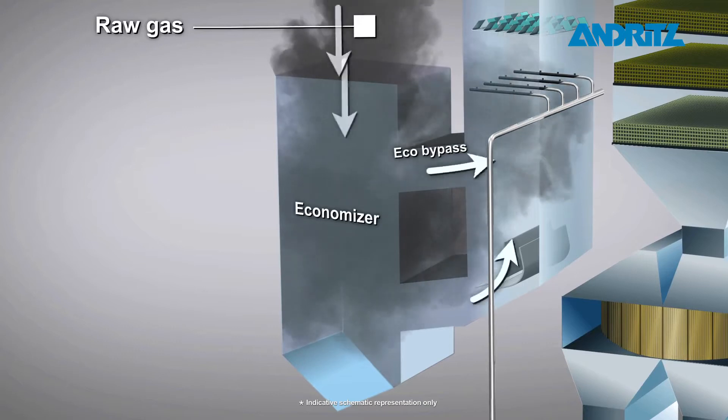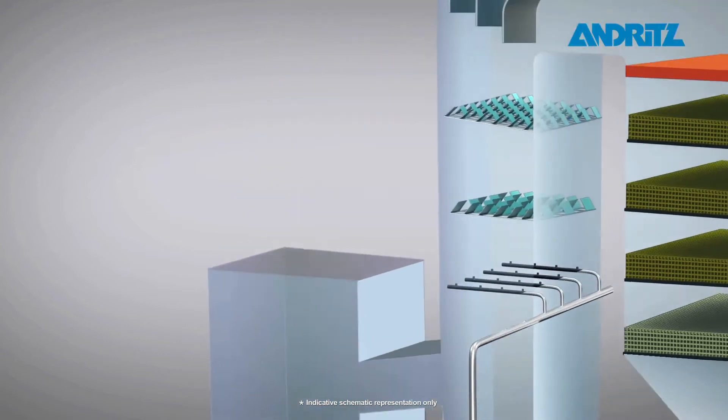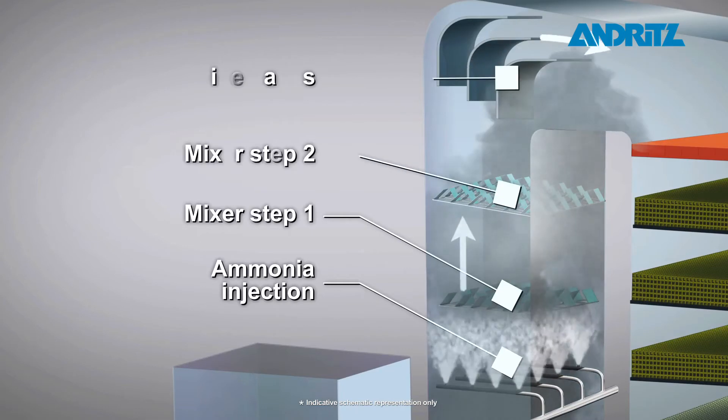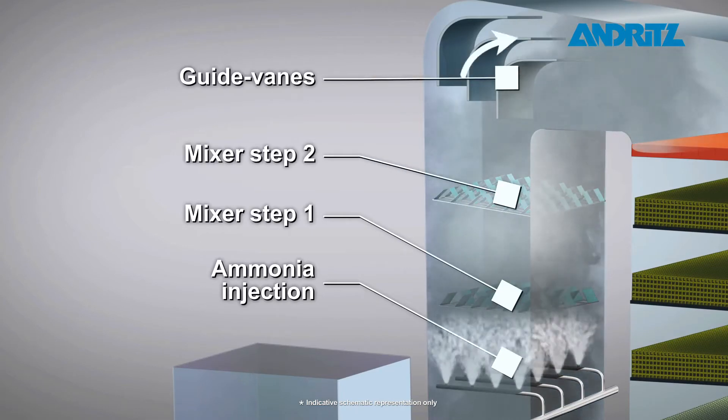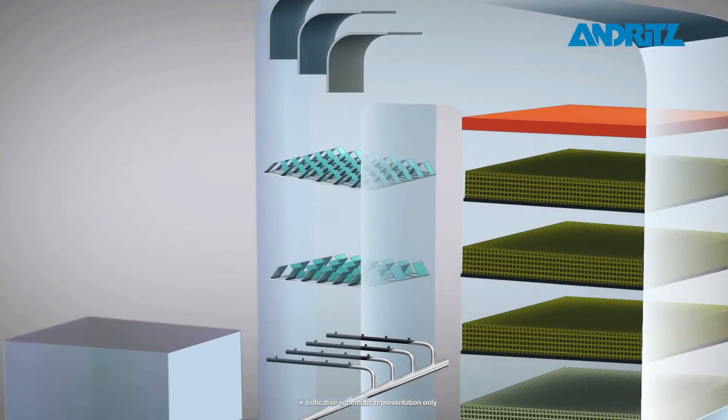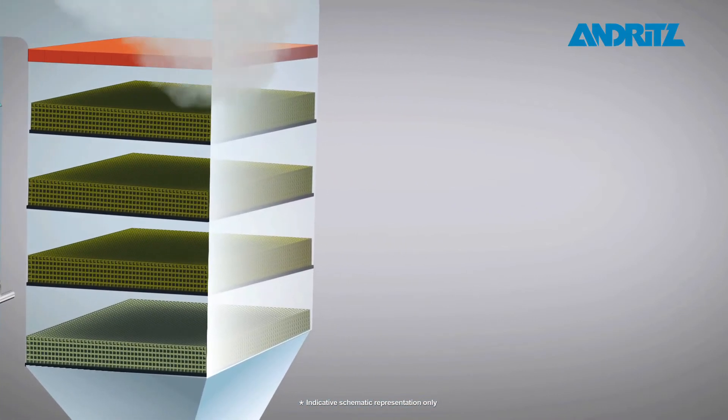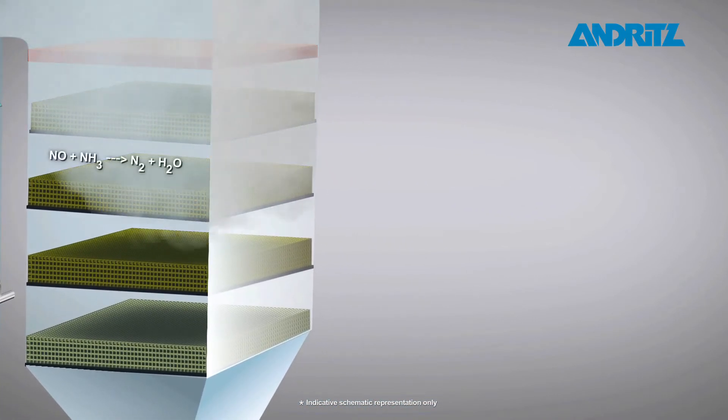The flue gas entering the reactor passes through the ammonia injection grid where ammonia is injected into the flue gas. The gaseous mixture passes through the catalyst where reduction of the oxides of nitrogen takes place.